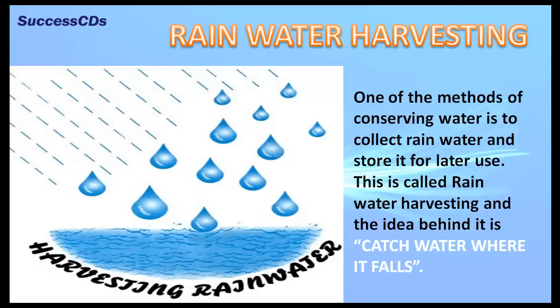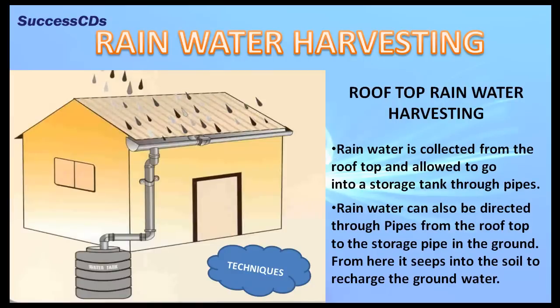Rainwater does not seep into the ground in places that are covered with concrete roads and buildings. The following techniques are applied to collect rainwater in such places. Rooftop water harvesting: rainwater is collected from the rooftop and allowed to go into a storage tank through pipes.